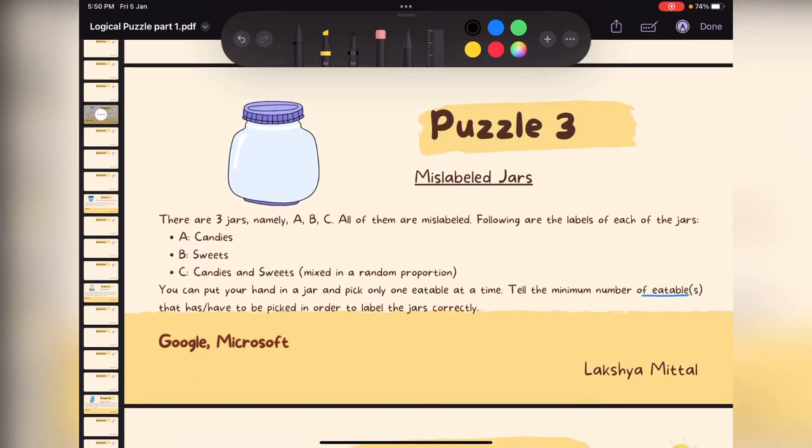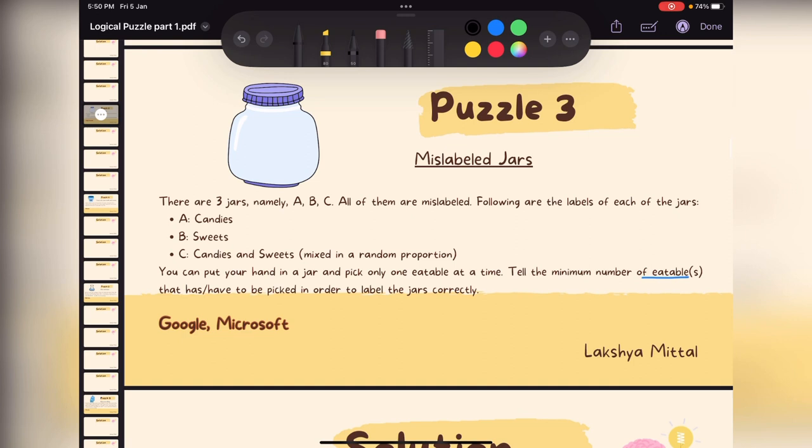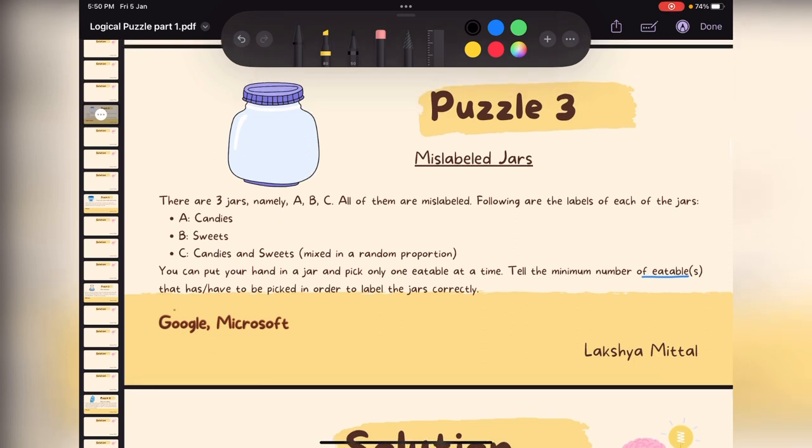Now quickly jumping on to puzzle 3 which is the mislabeled jars problem. And it is a very famous problem because it has been asked in multiple companies like Google and Microsoft.